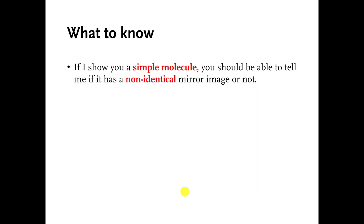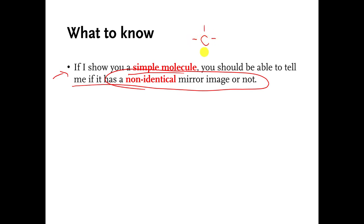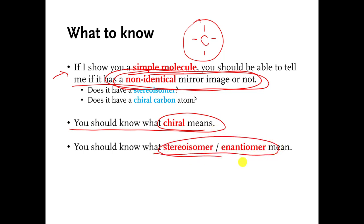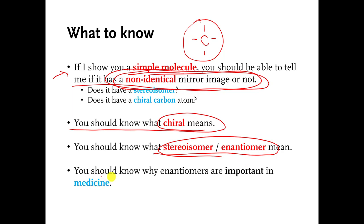So what do I want you to know? If I show you a simple molecule, you should be able to tell me if it has a stereoisomer: look at the carbon in the middle and ask, are there four different things attached? If there are, then it has stereoisomers. You should know what chiral means — there is something about the molecule that makes it have a left-handed or right-handed feature. You should know what stereoisomer or enantiomer mean, and you should know why enantiomers are important in medicine. That is the end of this video. The next couple of videos will deal with carbohydrates.